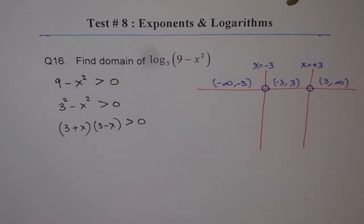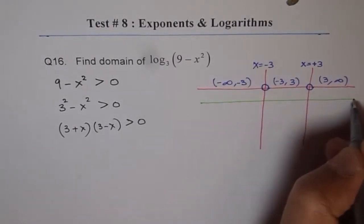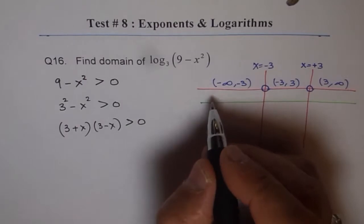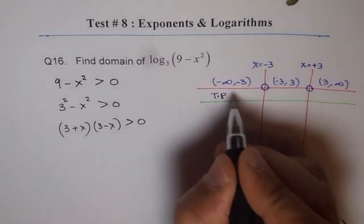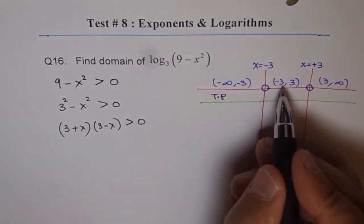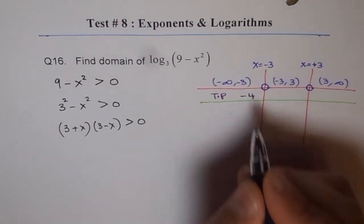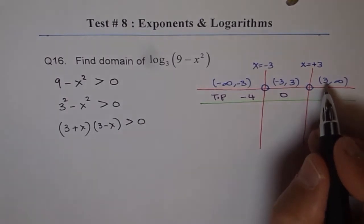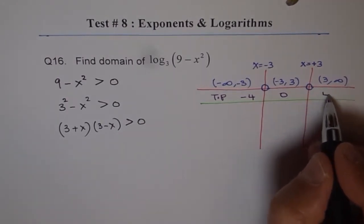What we should do is take a test point in each domain to test whether the graph is positive or negative. Let our test points be: beyond the left side of minus 3 we can take minus 4, between minus 3 and 3 we can take 0, and beyond 3 we can take plus 4.